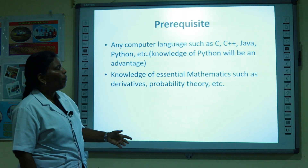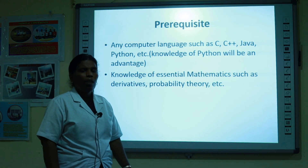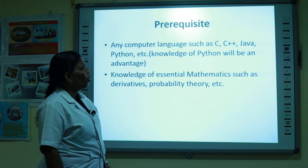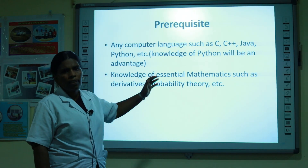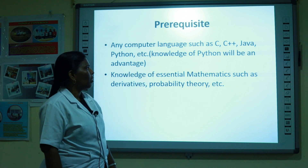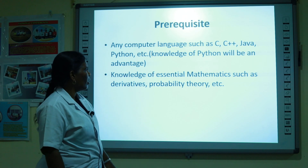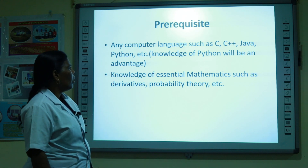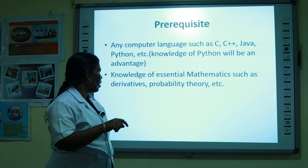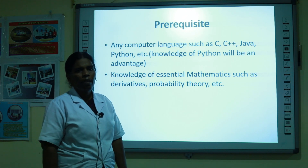Before learning or developing AI, we need to know computer languages such as C, C++, Java, and Python. Python is the most advantageous for implementing Artificial Intelligence. We also need essential knowledge in mathematics, such as probability theory and derivatives.